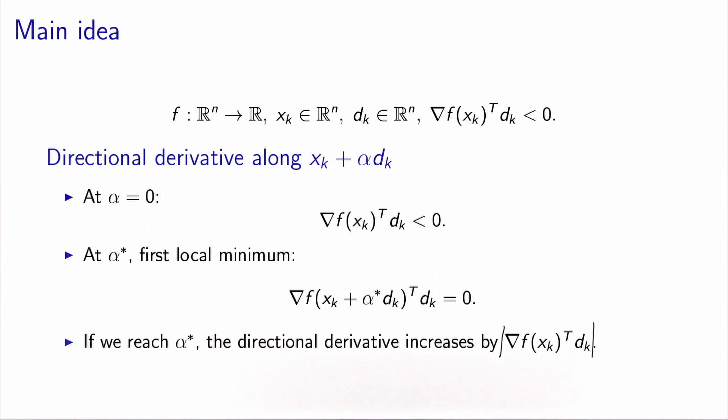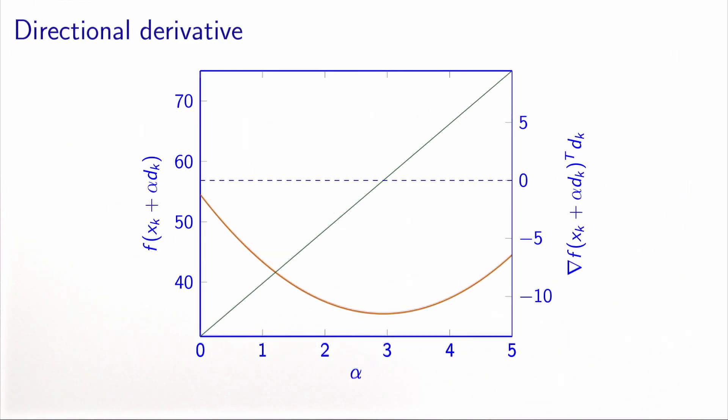So that's the first observation. We have a quantity, which is the directional derivative, which starts from a negative value and increases all the way to zero when we reach alpha star. Let's illustrate it on a picture. So here, I have on the x-axis the value of alpha, as we have shown before.